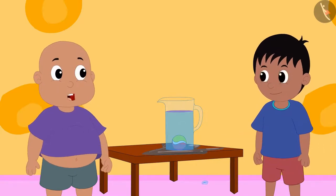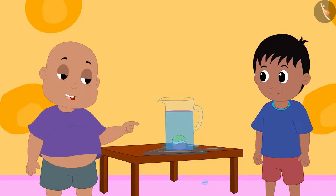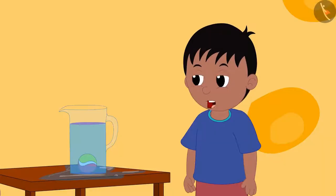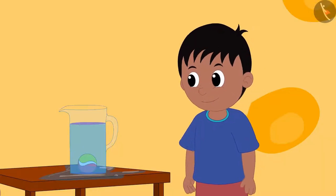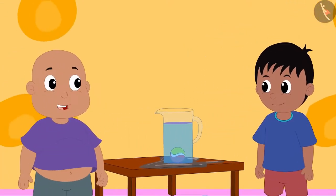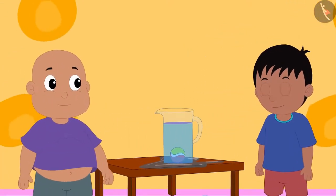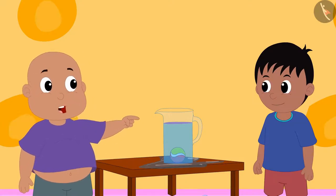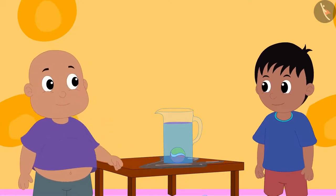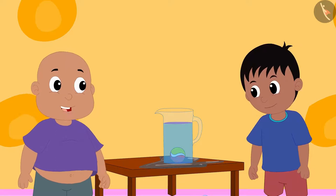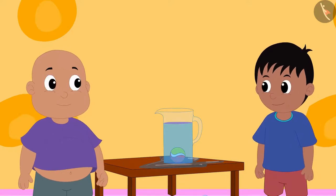Raju, this happened because every object occupies some space which we call the volume of that object. I could not understand anything. Bablu, can you explain me in more detail? Yes, but on one condition - you will wipe the water spilled on the table. All right, all right, agreed. Now will you please quickly explain to me what is volume?